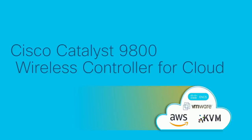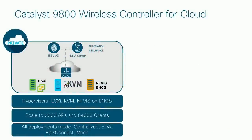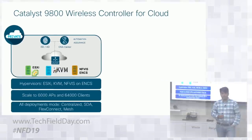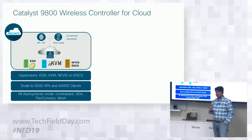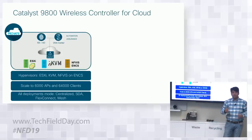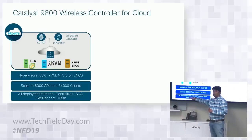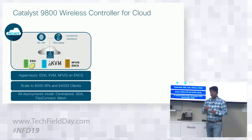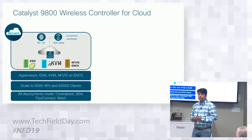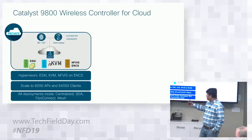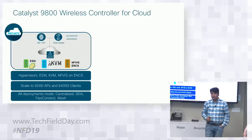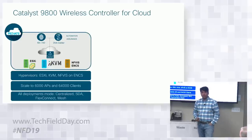For the private cloud, the same software image running on the appliance also runs on ESXi, KVM, or as NFVIS on Cisco ENCS. It will be supported from DNA Center for automation and assurance, and can scale up to 6,000 APs and 64,000 wireless clients even on a virtual machine. All deployment models — centralized wireless, FlexConnect, and Fabric — are supported. In AirOS, the virtual controller never supported this scale or these deployment modes, but Catalyst 9800 for private cloud supports all. It can also be used as a guest anchor controller.